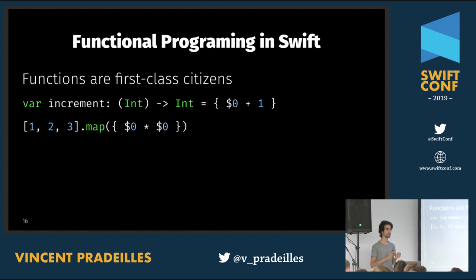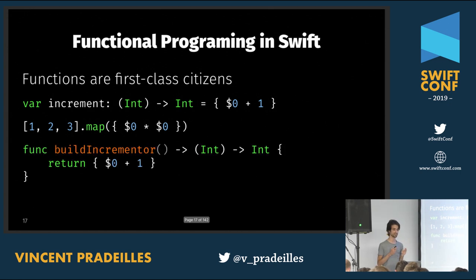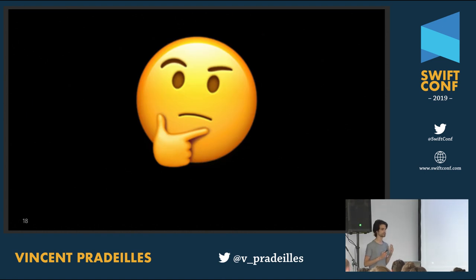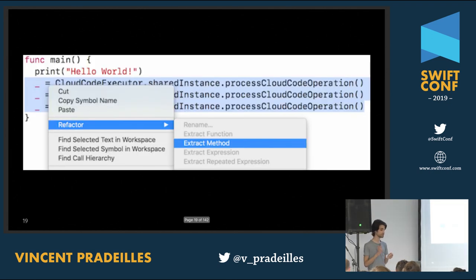Second, a function can take another function as an argument — these are called higher-order functions, like `map`. Third — sometimes less familiar — a function can also return a function. For example, a function called `buildIncrementer` returns an incrementer function that takes an integer and increments it. That's all you need to know about functional programming in Swift to follow this talk.